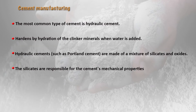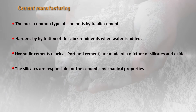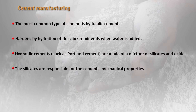The most common type of cement is hydraulic cement, which hardens by hydration of the clinker material when water is added. Hydraulic cements include Portland cement, which is made of a mixture of silicates and oxides. These silicates are responsible for the cement's mechanical properties.